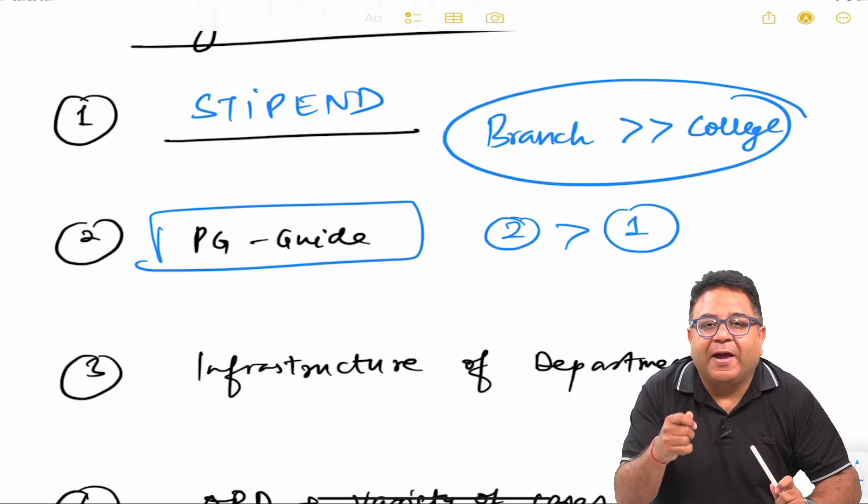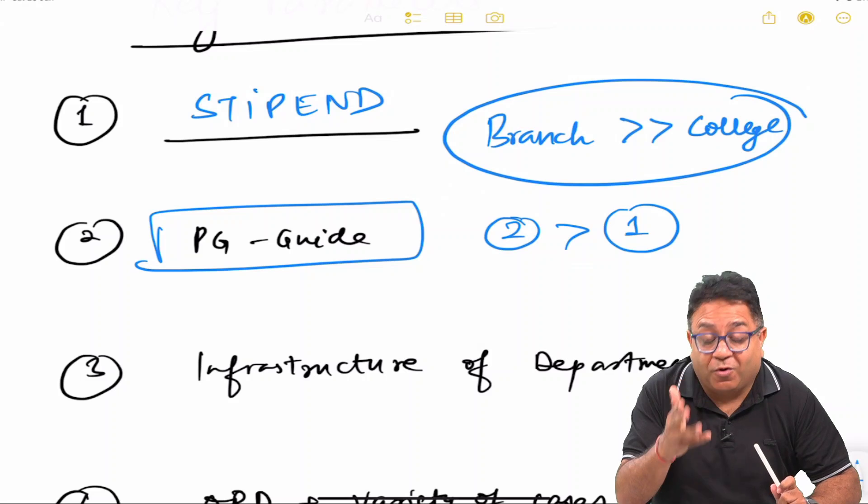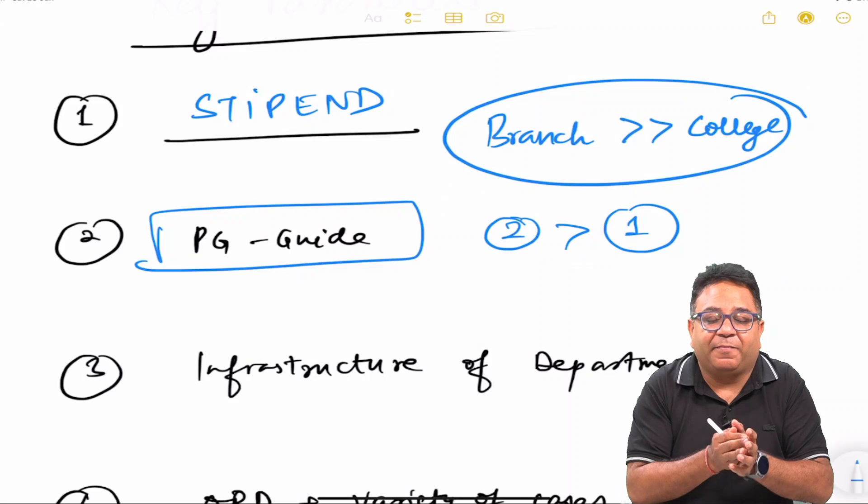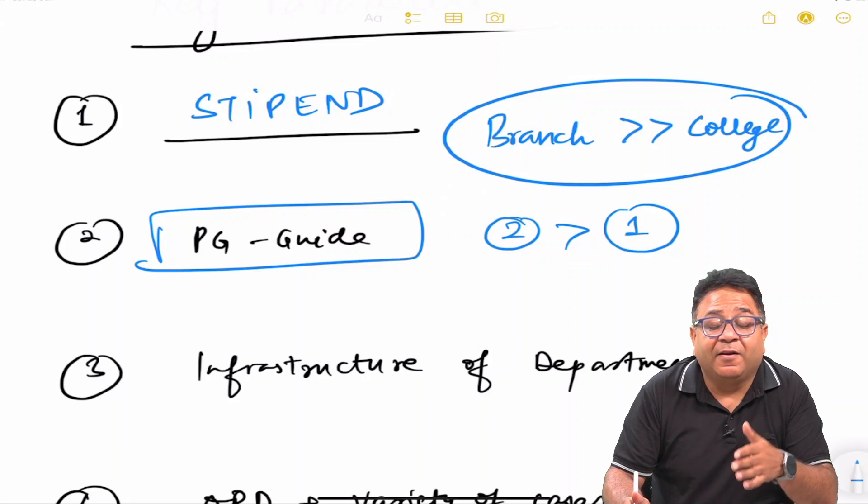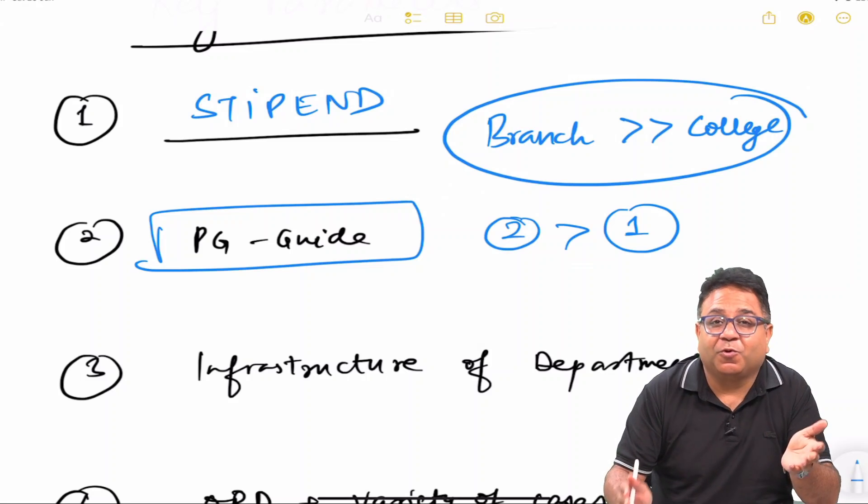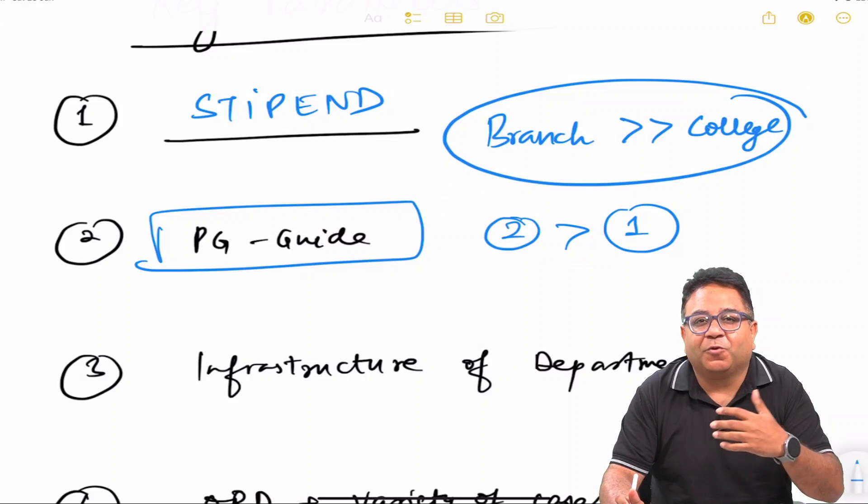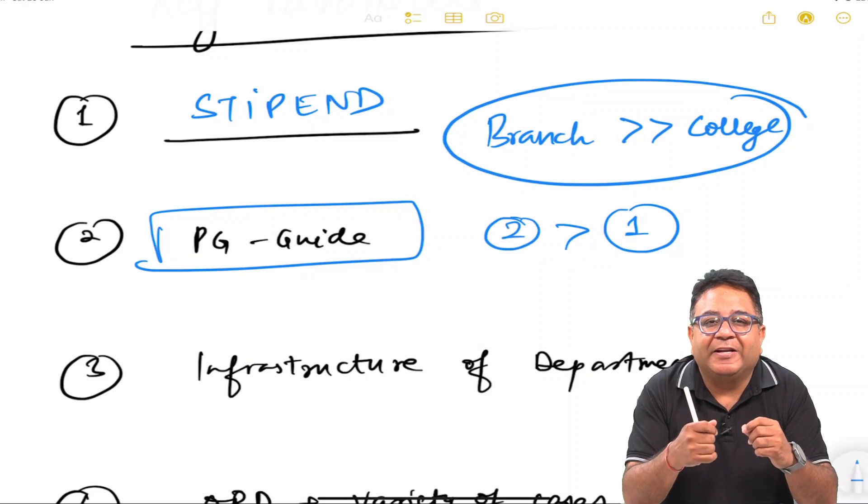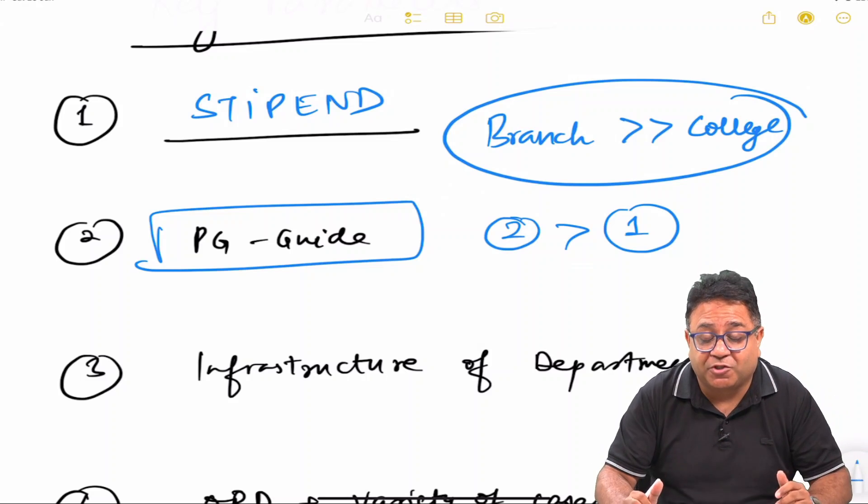This scenario is applicable to all branches, not only OS and ortho which are usually totally dependent on the PG guide because you haven't done anything in your BDS days. But it depends on endo also, prosto also, perio also, everywhere it counts a lot—pedo, public health, OMR, OP, everything matters if your guide is good.